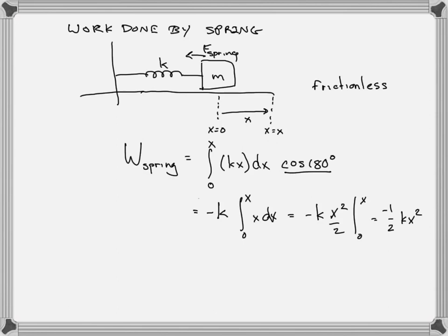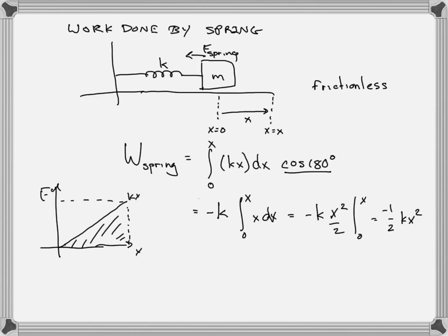Does the minus sign make sense? When I'm pulling it away from its equilibrium position, the spring is trying to pull back — it's trying to slow it down, resisting motion, doing negative work. That makes sense. The ½kx² comes from the fact that force versus x is linear — the force gets bigger as x gets bigger — so the work is the area under this triangle, which is ½ × base × height = ½kx², so the ½kx² makes sense and the minus sign makes sense.